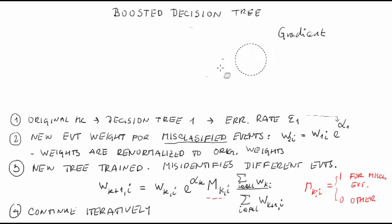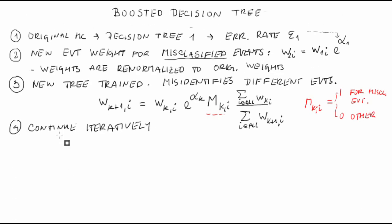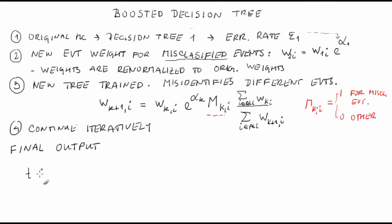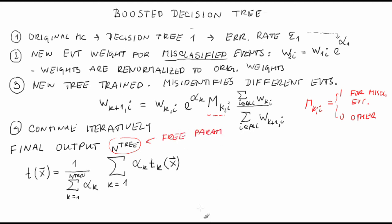Continue iteratively until you reach a predefined number of decision trees. The final test statistic is, again, given by the weighted average of the individual decision tree outputs. T of x vector equals 1 over sum over k going from 1 to the number of trees alpha_k times sum over k going from 1 to the number of trees alpha_k T_k of x vector. Note that the number of trees is a free parameter of the boosting algorithm. At some number of trees, the AdaBoost starts to be overtrained. It is good to stop at that number. Typically, few hundred trees are trained.